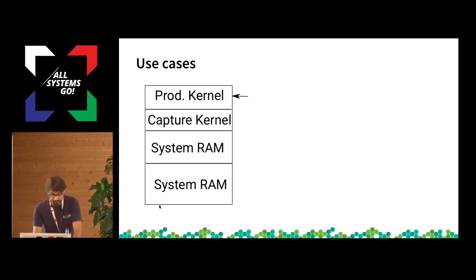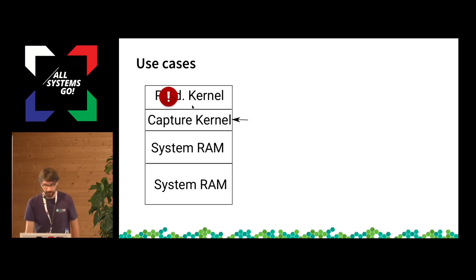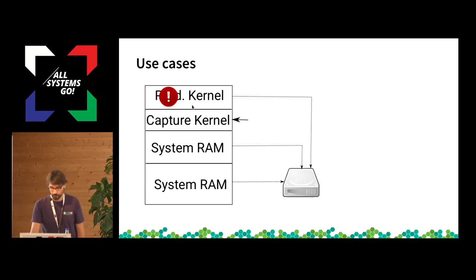So how does this look? Imagine this graphic represents the memory of your system. You have somewhere in memory your production kernel running, shown by the arrow. When the production kernel crashes, the capture kernel gets started, and the capture kernel takes all the memory of the production system and creates a dump file.